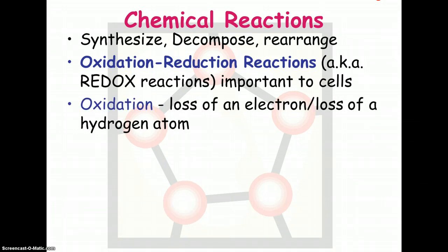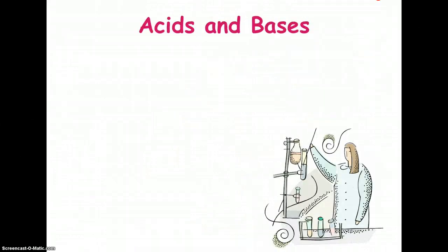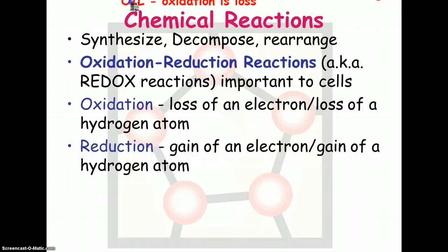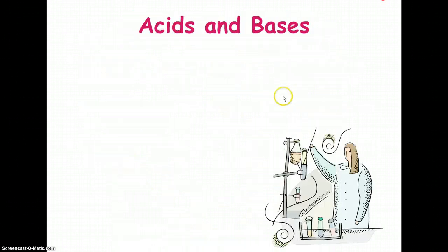For the purposes of this class, oxidation refers to the loss of an electron, or it could be the loss of a hydrogen atom, because a hydrogen basically only has one electron, and reduction is the gain of an electron. An easy way to remember this, you may remember from chemistry, oil rig. Oil, oxidation is loss, and rig, reduction is gain. So oxidation is the loss of an electron, and reduction is the gain of an electron.